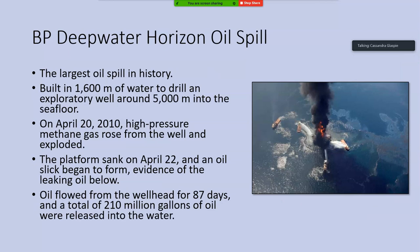The Exxon Valdez oil spill was the largest oil spill to have occurred in the U.S. until the BP Deepwater Horizon oil spill, which occurred in 2010. Since then, the Deepwater Horizon has been the largest oil spill in history. The oil rig was built in 1,600 meters of water to drill an exploratory well around 5,000 meters into the seafloor — the type of rig trying to access harder-to-reach oil reserves, pushed further into deeper and deeper water.